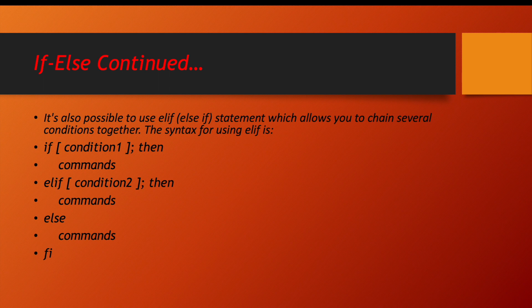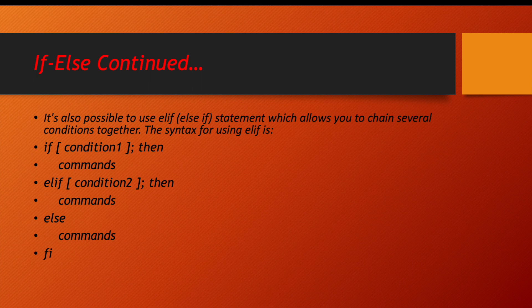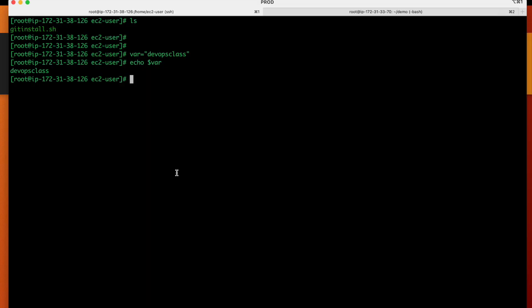In if-else you can have one condition in the if and one in the else, but if you want to handle twenty conditions there are two ways. You can repeat the if statement twenty times, or you can use the 'elif' keyword. The syntax is: if condition one, elif condition two, elif condition three, else the final statement, then close with 'fi'. This is the high-level syntax for if-elif-else in shell scripting.